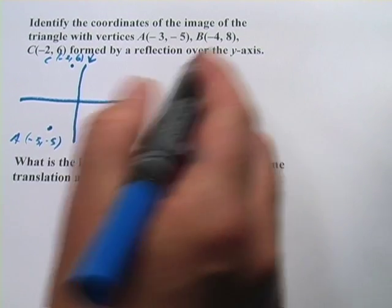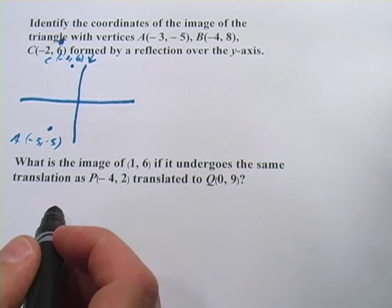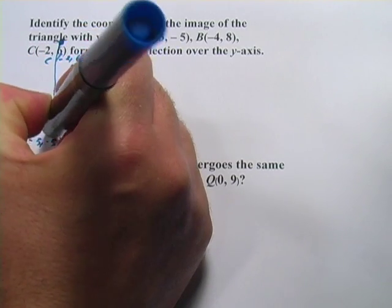And that was C. I missed B. B(-4, 8). Well, that's going to be way up here. Okay. So we've got this big old triangle.